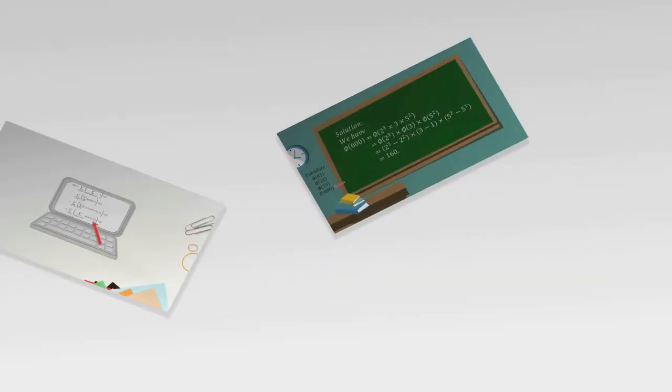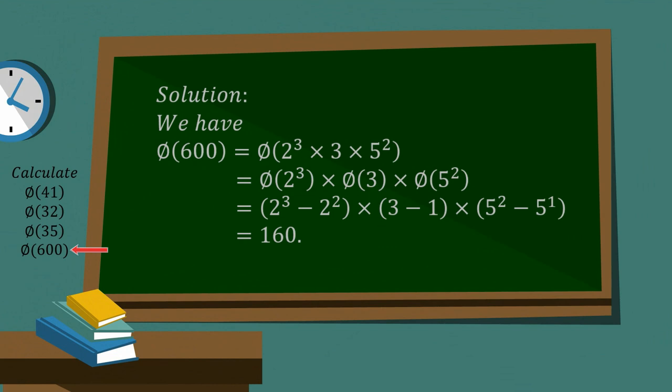Okay, now let's go on to phi of 600. Now there's no new rules here. We just have to use the rules that we've got so far. So what we can do is, firstly, let's express 600 as the product of 2 to the 3 times 3 times 5 squared. And now we can look at the 2 cubed and the 3 and say, well, the GCD of 2 cubed and 3 is 1, and the GCD of 3 and 5 squared is 1.